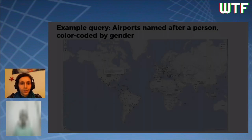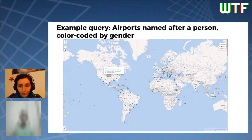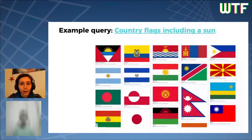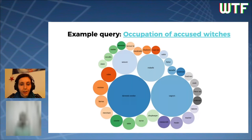For example, here's a map of the airports of the world named after a person, where the color of the dot represents the gender of that person. Or you can make a list of country flags that include a sun, because if the data is properly modeled in Wikidata you can describe what elements compose a country flag. Or you can have a bubble chart with the occupations of accused witches — because that's the kind of data we have in Wikidata.